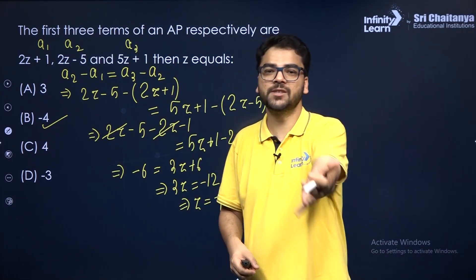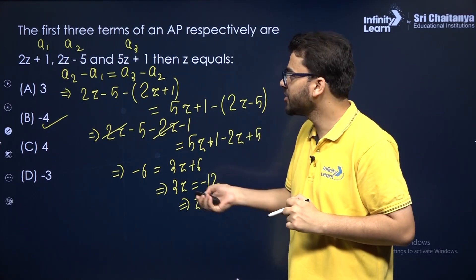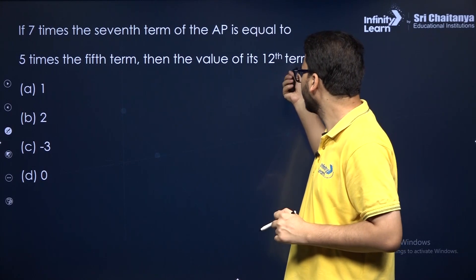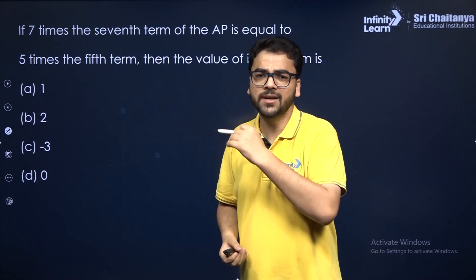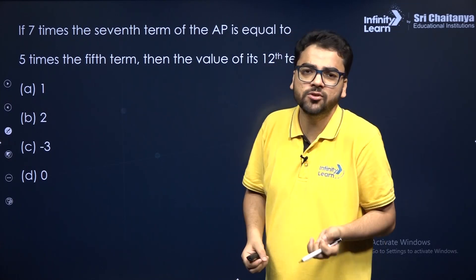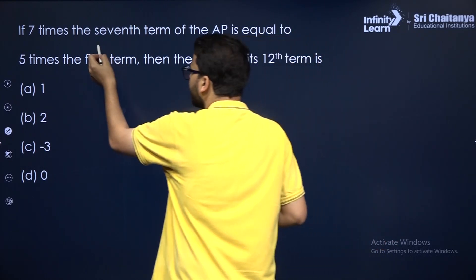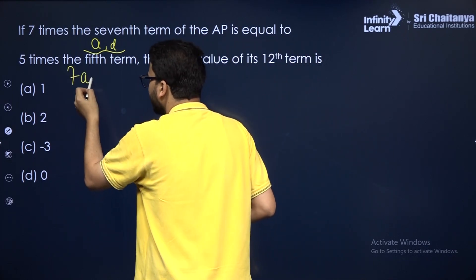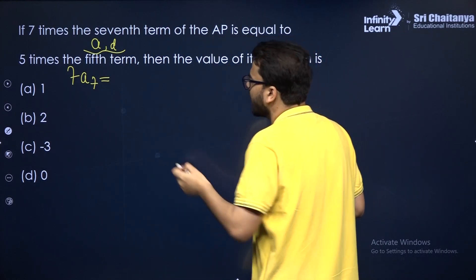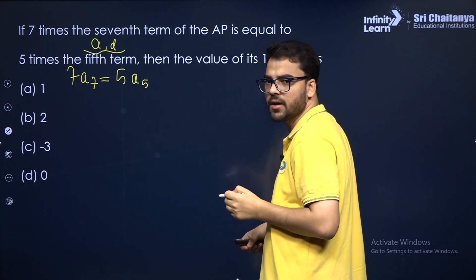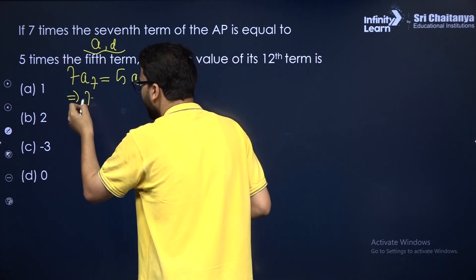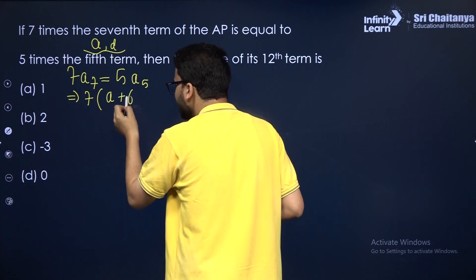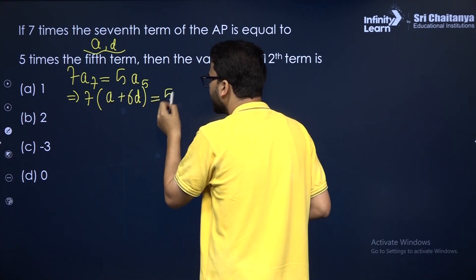That was a basic question on the most basic property of an arithmetic progression. Next question: if 7 times the 7th term of an AP is equal to 5 times the 5th term, find the 12th term. Assume first term is A and common difference is D. Using the nth term formula A + (N−1)D, the 7th term is A + 6D and the 5th term is A + 4D.